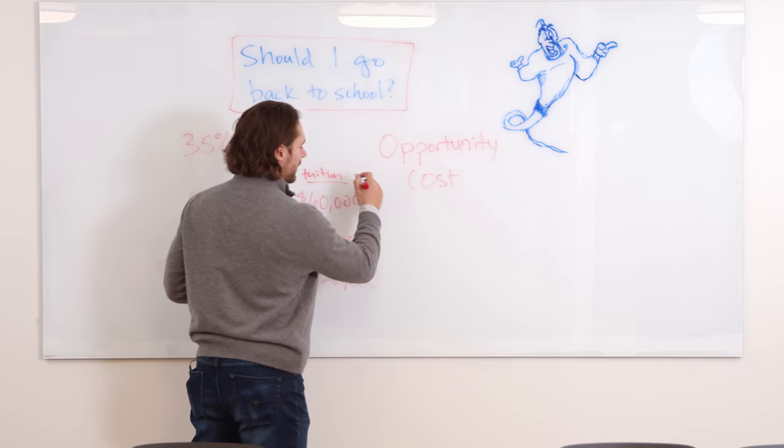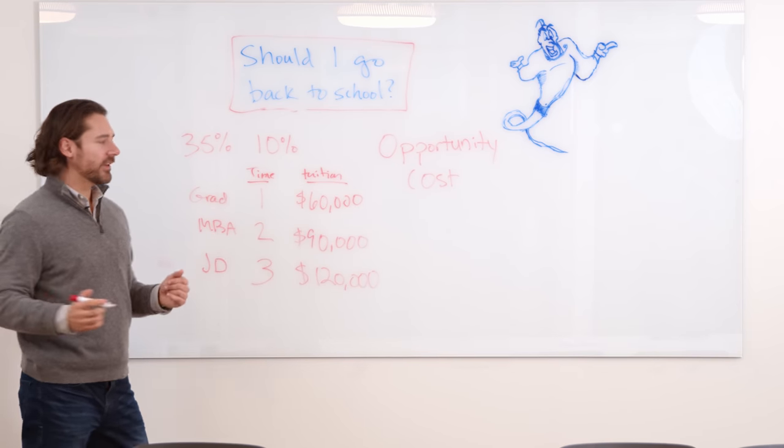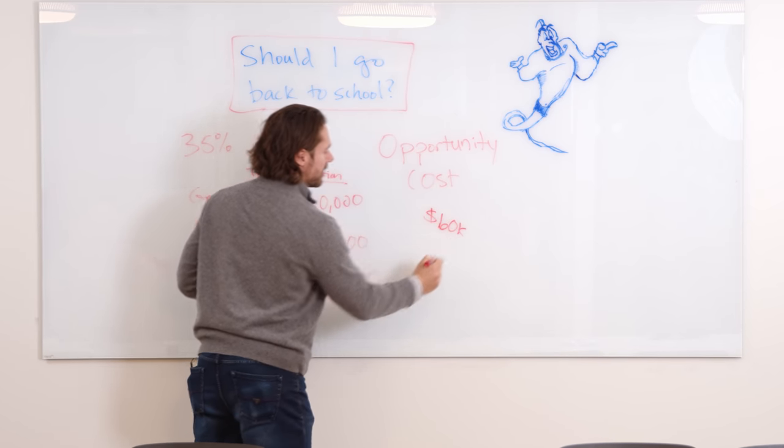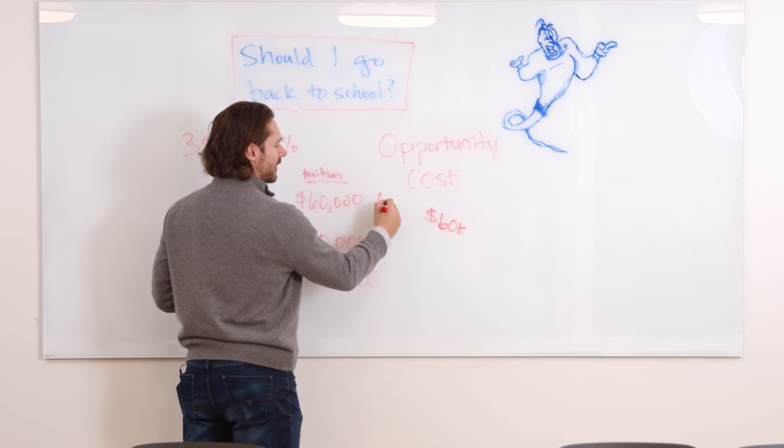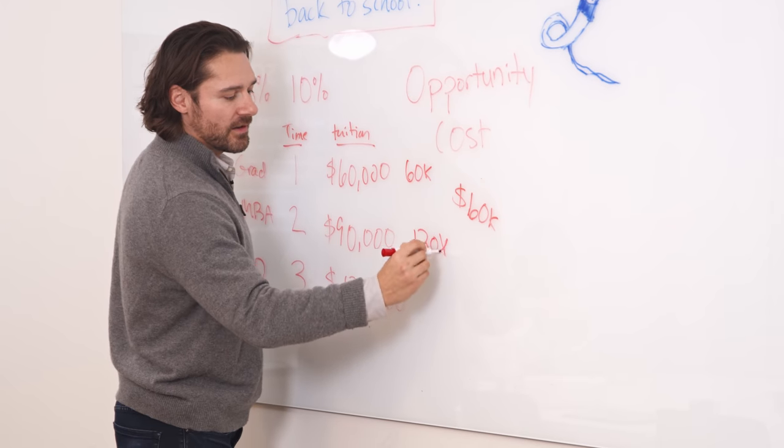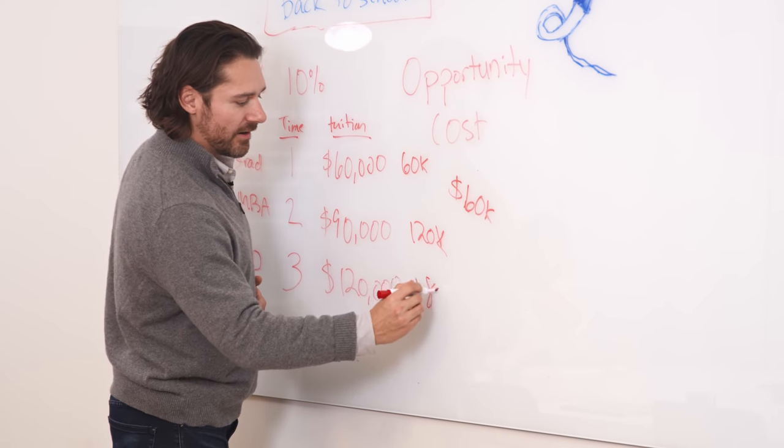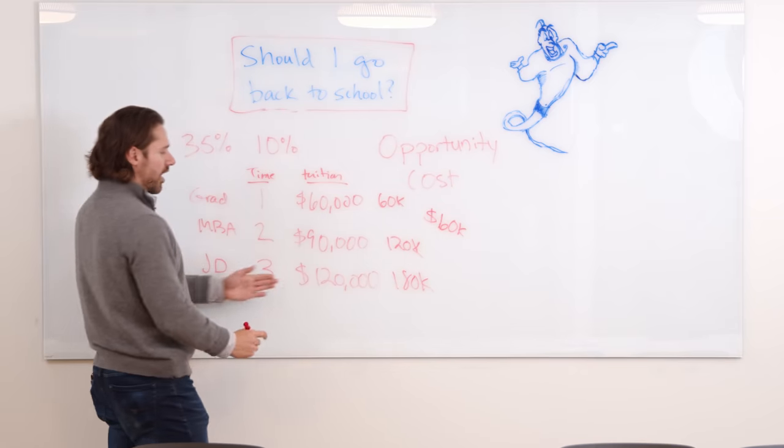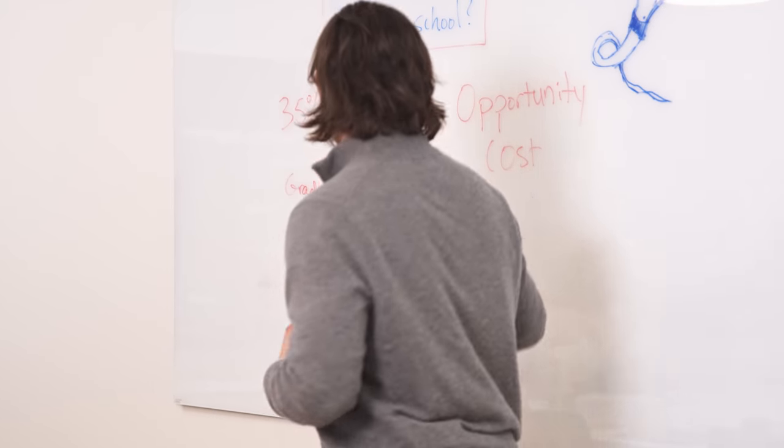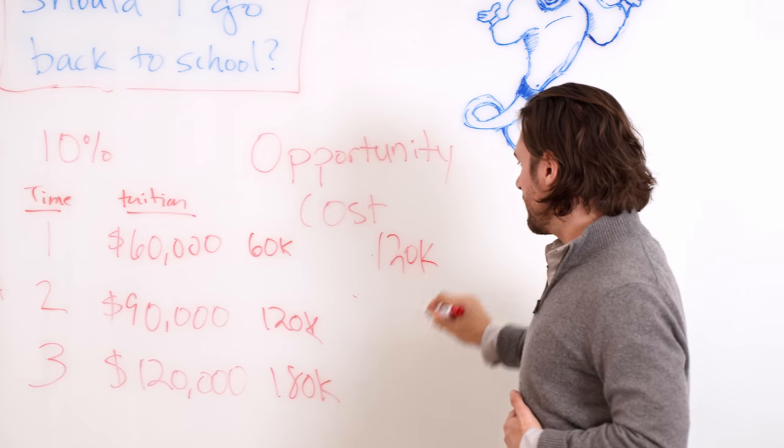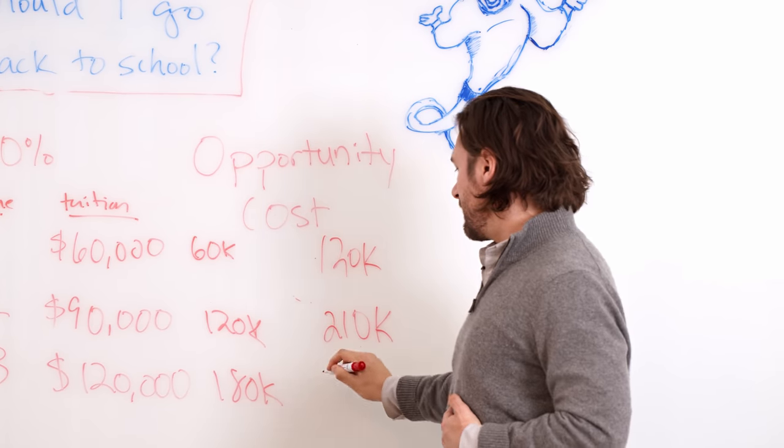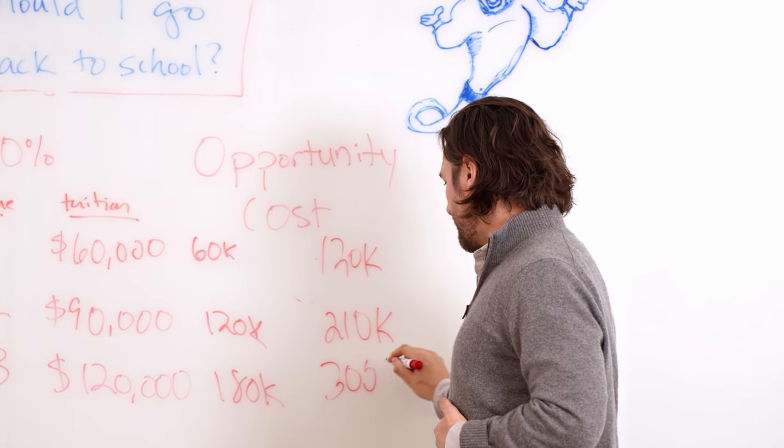Not only that, but if you're taking this time off, let's just say for the sake of argument, you're earning $60,000 a year. You're missing out on another $60,000 in income here, $120,000 here, and $180,000 here. So all in all, these options cost you $120,000, $210,000, and $300,000.